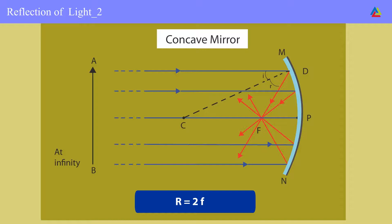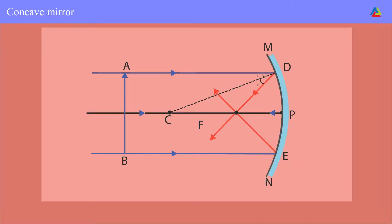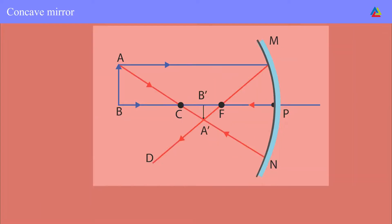The image formed by a spherical mirror depends on the position of the object. If the object is placed at infinity, the image forms at the focus and will be highly diminished, point-sized, real, and inverted. This happens because rays parallel to the principal axis coming from an object at infinity, after reflection, pass through the principal focus. If the object is placed beyond C, the image forms between F and C and will be diminished, real, and inverted.